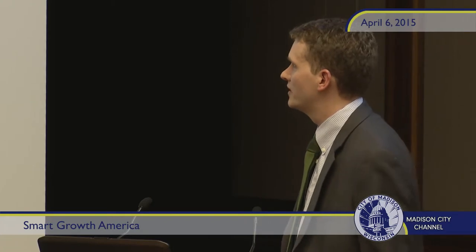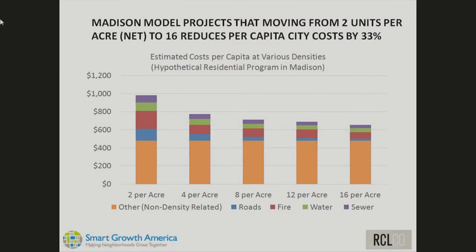Summing up for Madison with a hypothetical residential program, total cost per capita includes non-density-related costs at the bottom — primarily police and other functions — which don't vary with density at all. The density-related categories — roads, fire, water, and sewer — do vary significantly. Moving from 2 units per acre, where costs are roughly $950 per capita, to 16 units per acre, where costs drop below $700, represents a one-third savings. That's a fairly significant reduction.